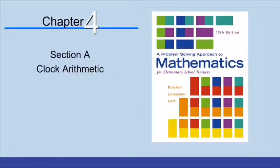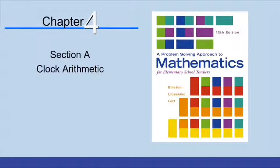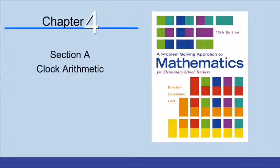Hi, everyone. Today we're going through a section of our Math for Teachers book. This is a problem-solving approach to mathematics for elementary school teachers, for our course called The Real Number System. This section is not actually in the textbook — it was added as an online-only module. I've called it Section A because they called it Module A. So this is Chapter 4, Section A. Today we're talking about clock arithmetic.